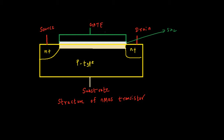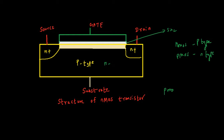Regarding structure: for NMOS the substrate is P-type, and for PMOS it will be N-type substrate. For PMOS, the substrate is N-type and it will have P+ regions instead of N+ regions. Now let's see the working of this NMOS transistor in a little more detail.